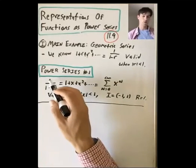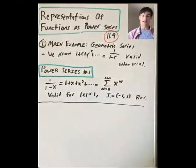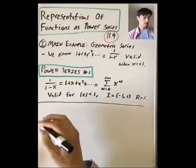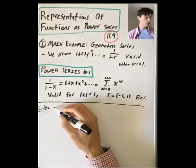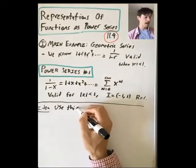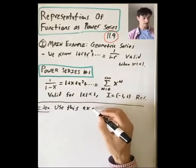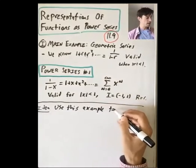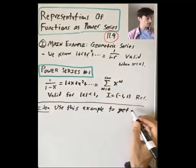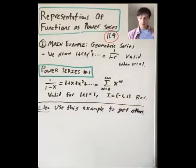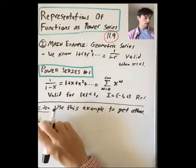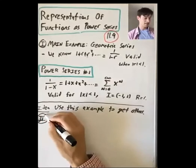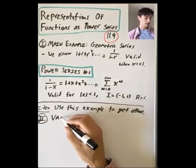So what we're doing is writing this function as a power series, and they're equal everywhere the power series converges. The main idea of this lecture is we're going to use this first example to see lots of other examples — we're going to use the geometric series to get other power series. Let's start with variations of this example.